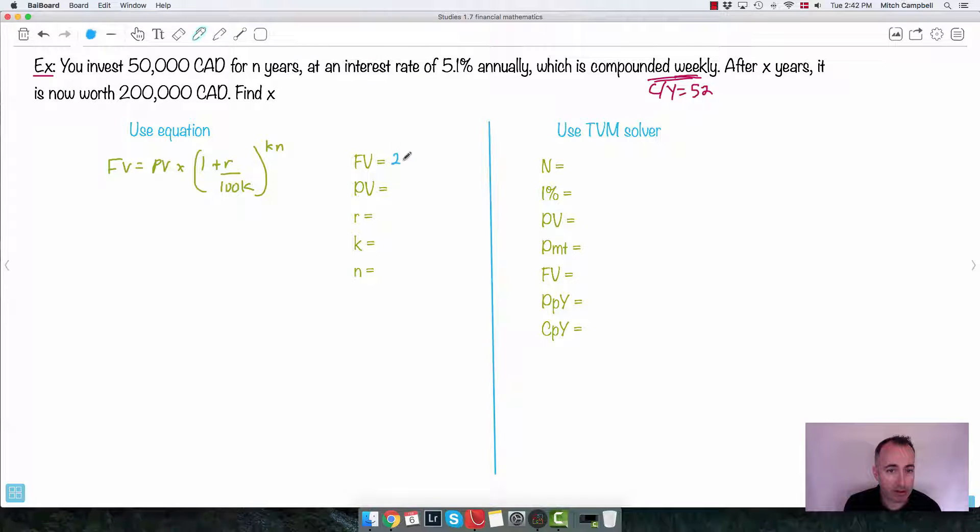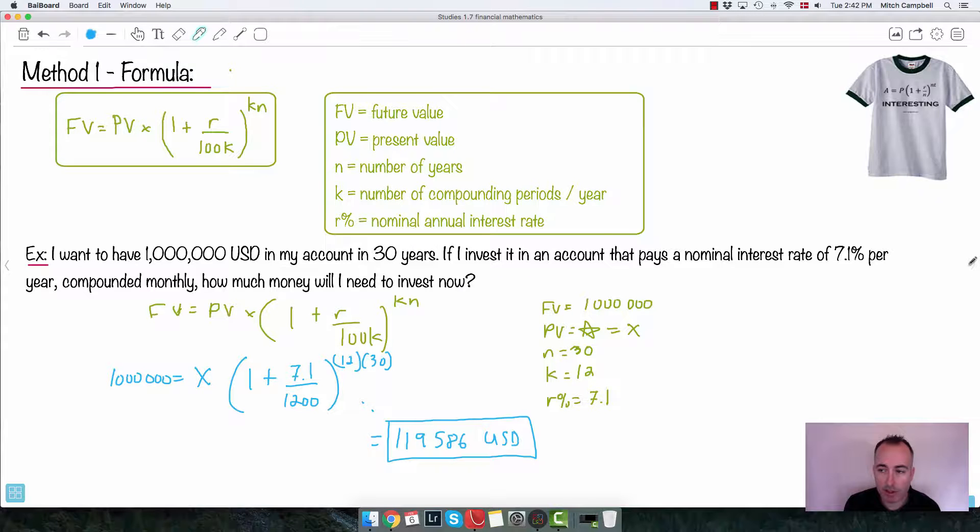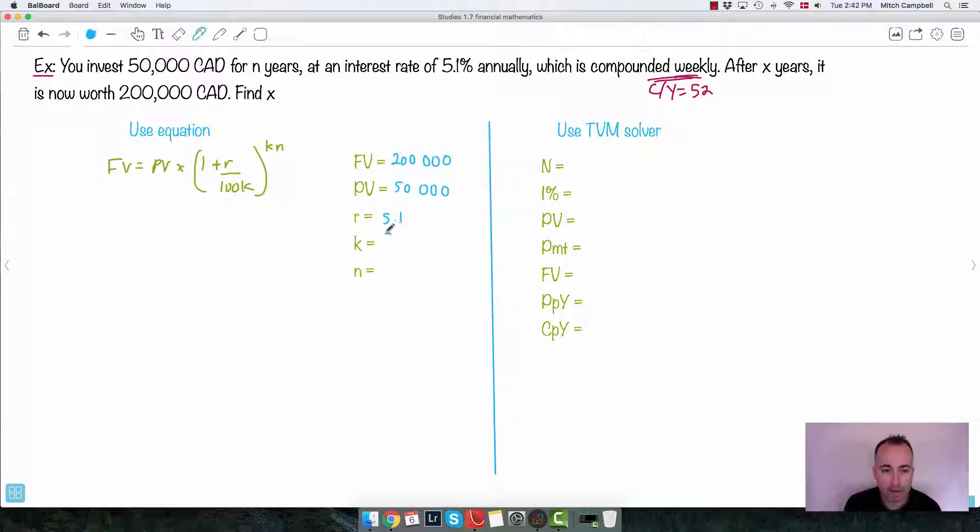Future value is 200,000. Present value is 50,000. Interest rate as a percent is 5.1. K is, remember what K is, and if you're not sure, you go back and you read it. K is the number of periods per year. So K is 52. N is the number of years. So in this case right here, that's my X. That's what I want to find. So I put all this into this. So I'd say 200,000 equals 50,000 times 1 plus 5.1 over 5200, all to the power of 52 times X. Here's the problem. I've got to solve for X. That looks really gross. I'd better use my calculator.